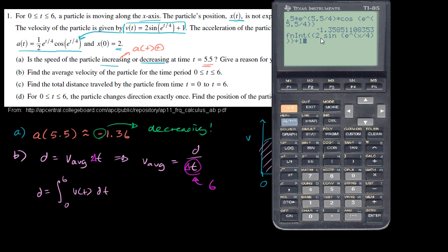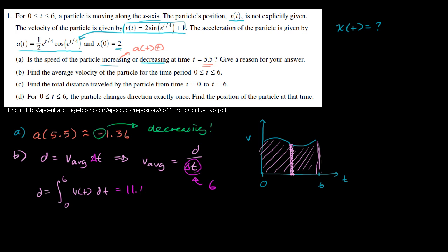The variable of integration is x, and our bounds are from 0 to 6. If I haven't made a mistake with the parentheses, this should evaluate to something. The TI-85 is chugging away — 11.696. So this equals 11.696. The total distance traveled is 11.696, and our change in time is 6, so we just divide those.